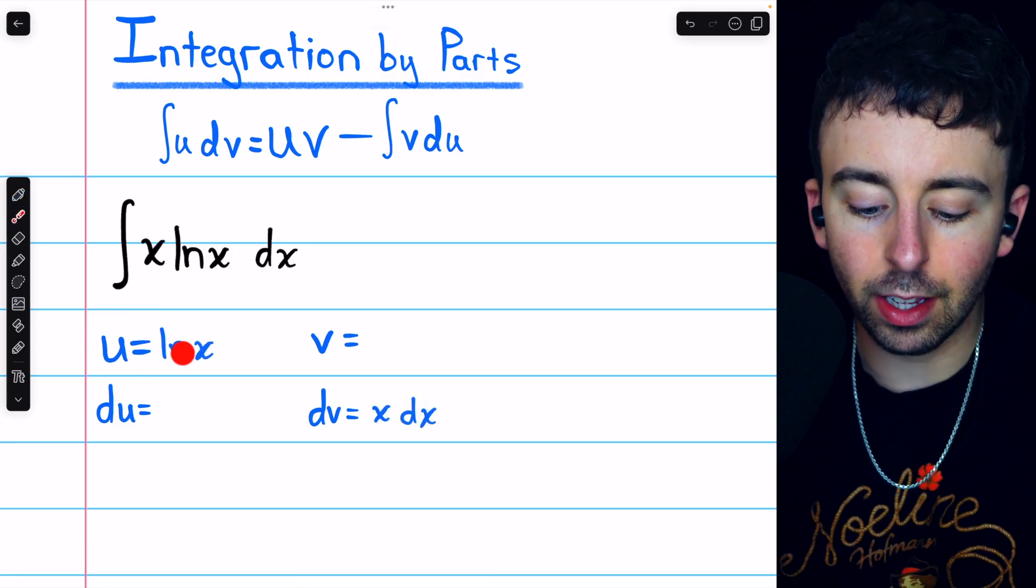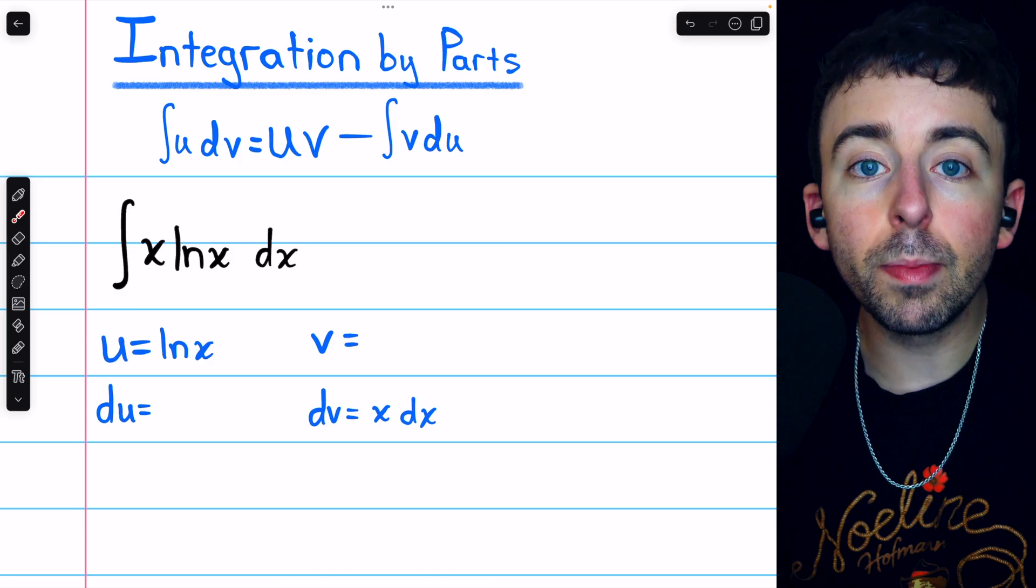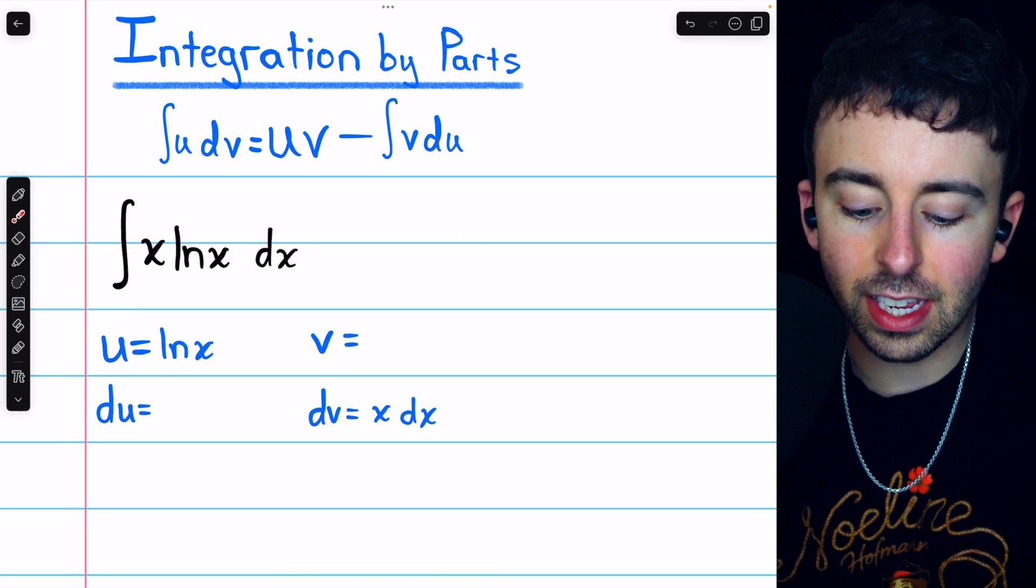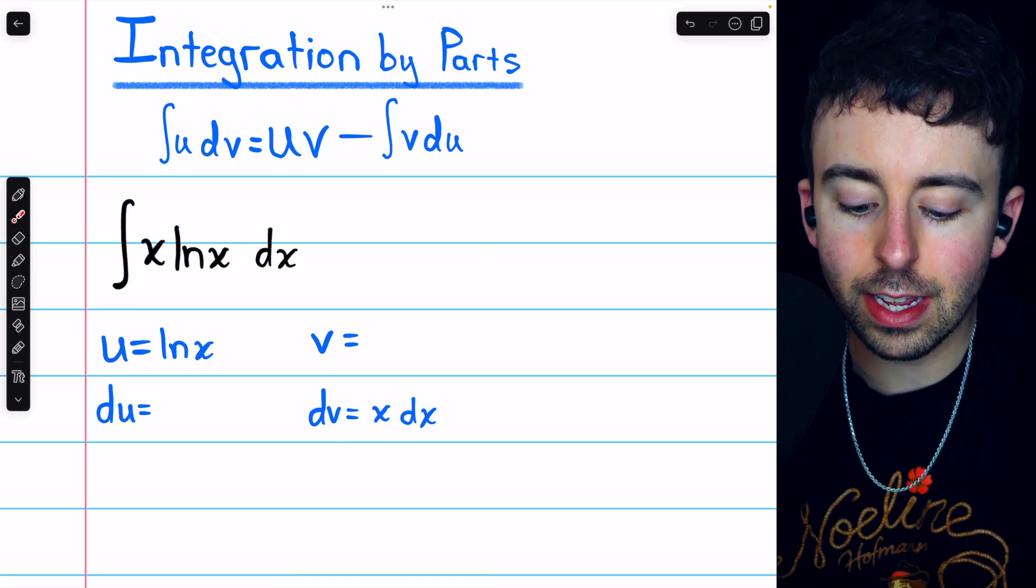Remember, we get to pick u and dv, but we must differentiate u to get du, and integrate dv to get v.